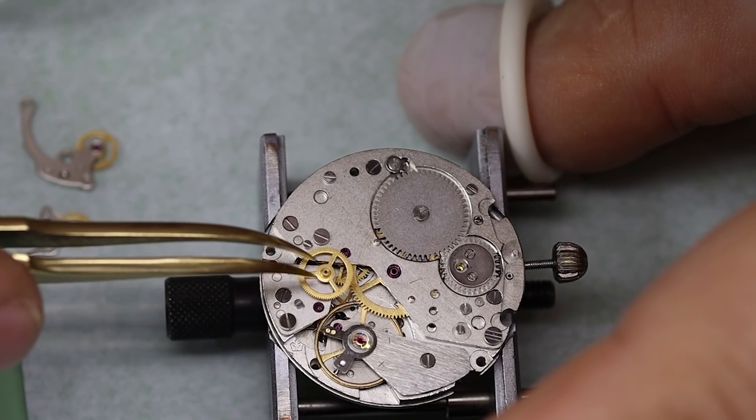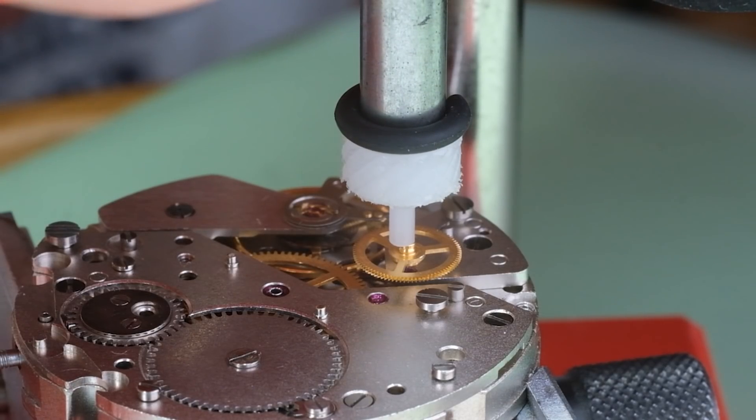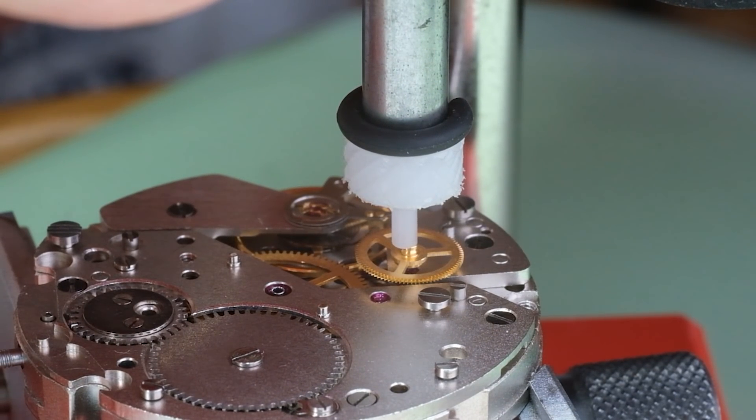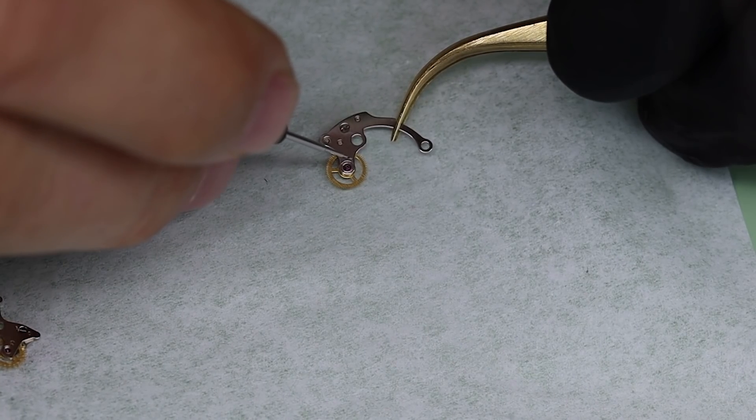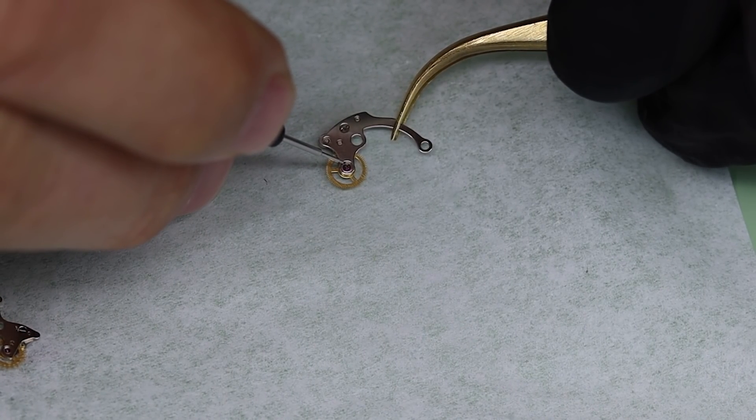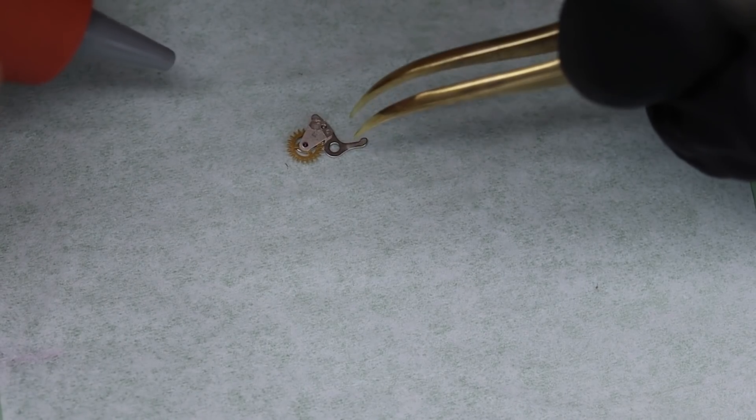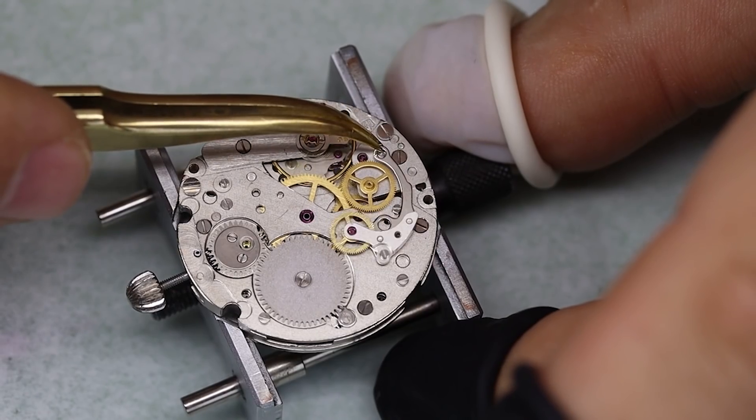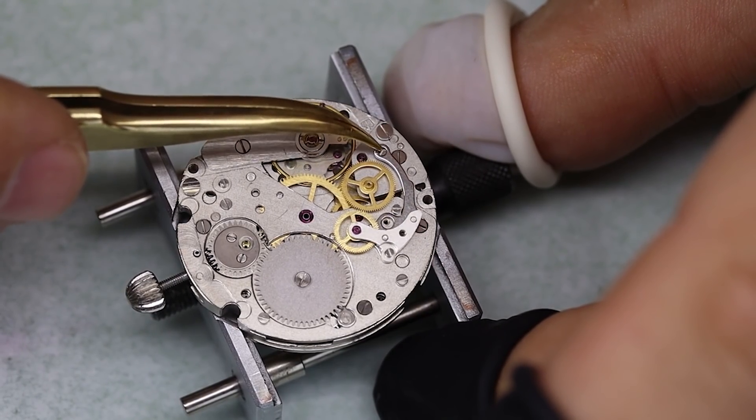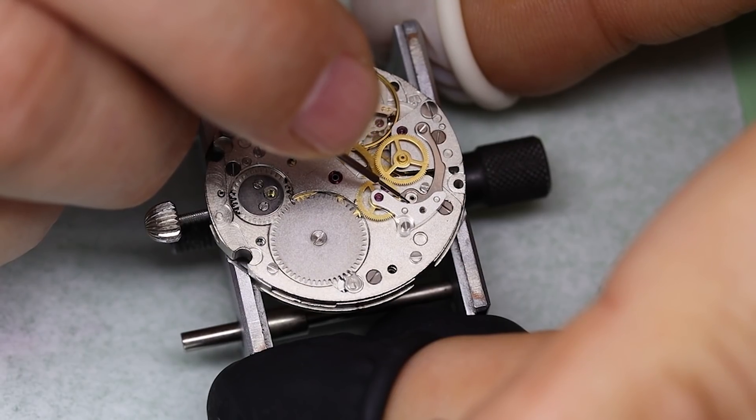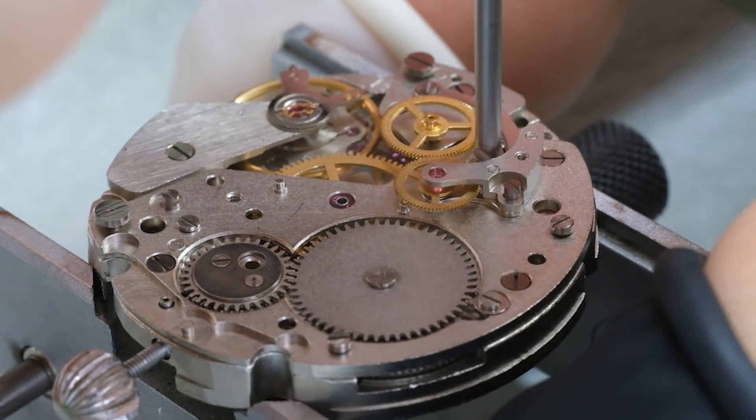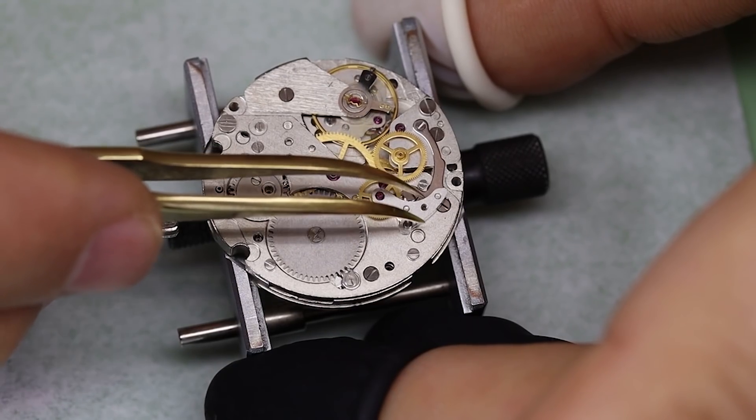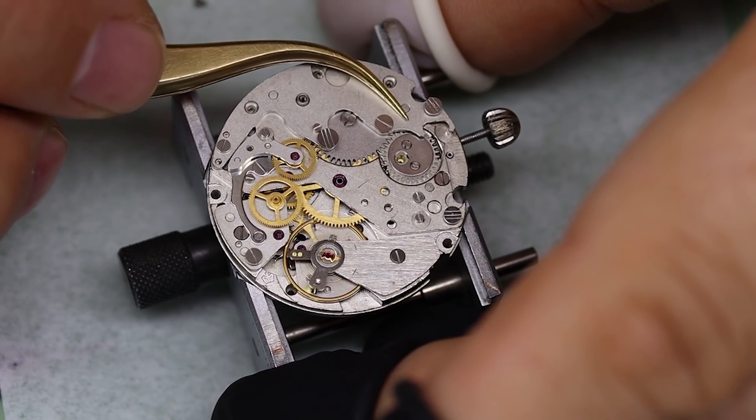All right, time for the chronograph. First thing we put on is the chronograph driving wheel. It is press fit onto the extended pivot of the fourth wheel. And the driving wheel always meshes with this clutch, this is a horizontal clutch. So that's the next one we're going to put in. Just make sure it runs freely and we give it a little bit of oil. Yeah, the neighbor has a dog, and we have cats. I'm not sure if that's related, but that dog sure likes to bark.